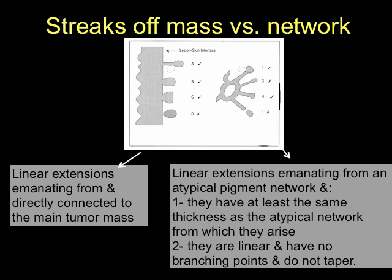Lines coming off a network are considered streaks if they have at least the same thickness as the atypical network from which they arise, are linear with no branching points, and do not taper and fade as they progress towards the periphery. Line G is not a streak because it is thinner than the network from which it originates. Line I represents a peripheral globule, the significance of which will be discussed shortly.